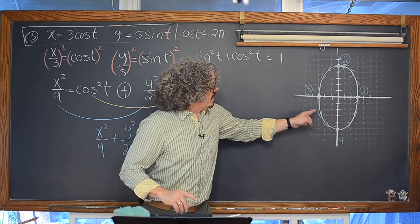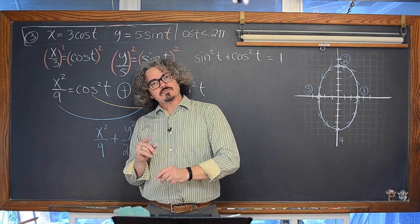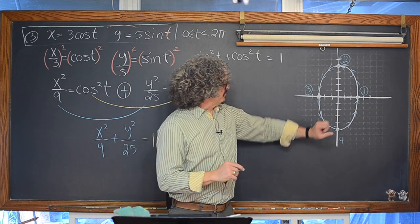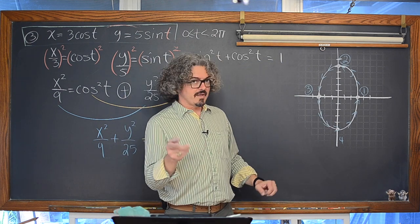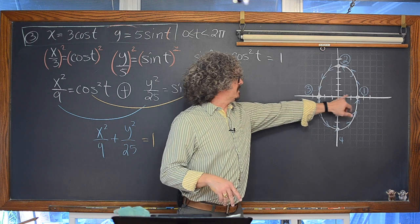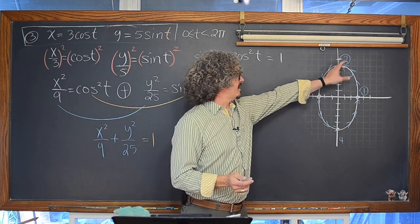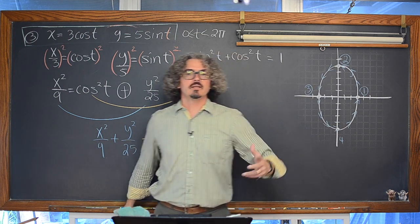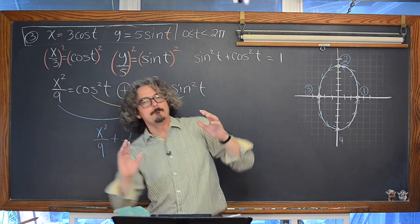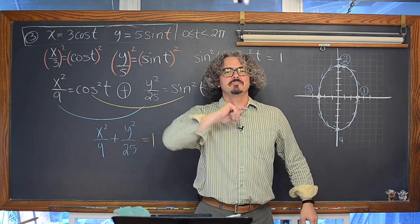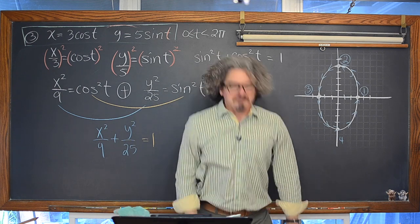Just like that — using the Pythagorean identity — we arrive at the same final answer: the ellipse x²/9 + y²/25 = 1. We still need that t-table for direction of the path. The domain is between negative 3 and positive 3, and the range is between negative 5 and 5.